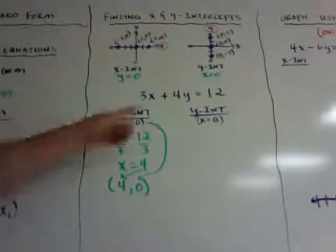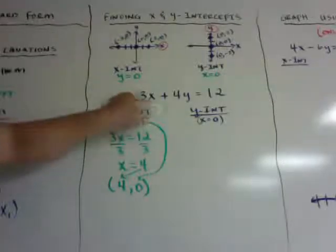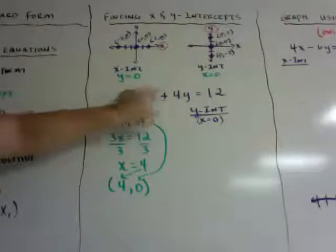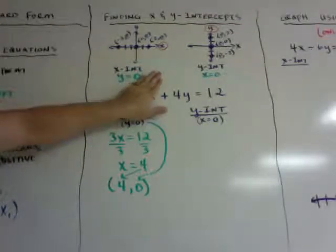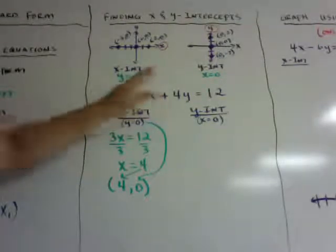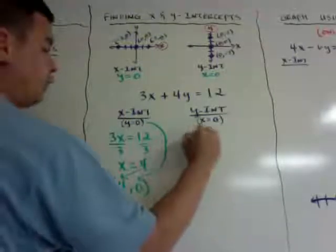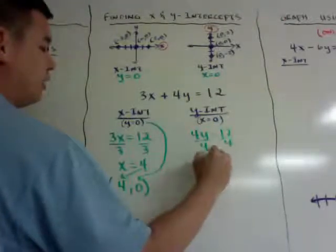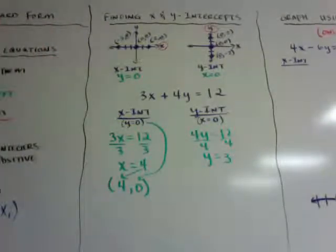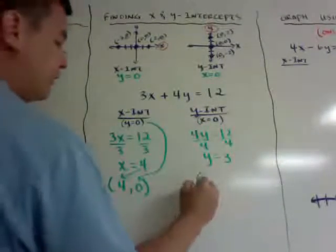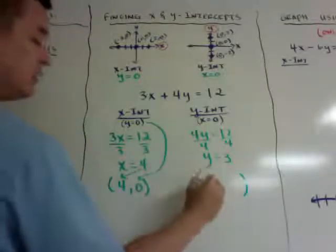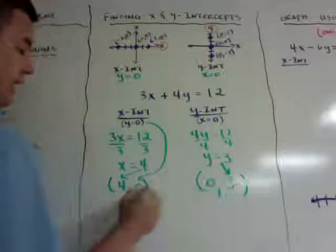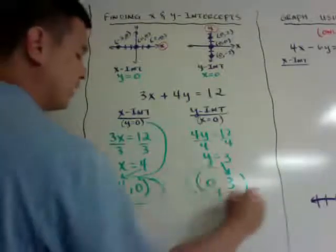Same thing for the y intercept. If x is 0, I can just cover up the x term — since it's a positive, it doesn't make a difference here. So I get 4y equals 12, divide both sides by 4, y equals 3. That is my y intercept. I want you to put it into coordinates: x is 0 and y is 3, so my answer would be (4, 0) and (0, 3).